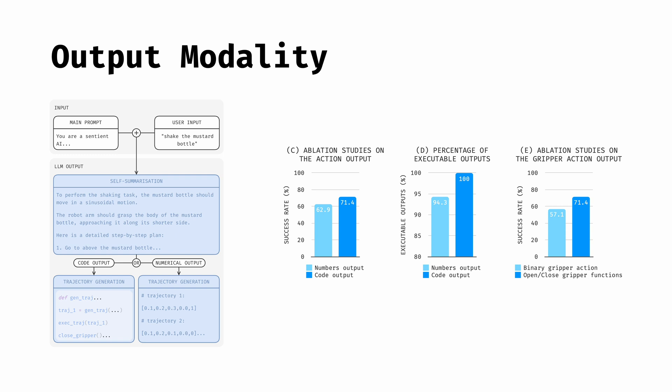For the gripper open or close action, we compare using a binary value 0 or 1, or explicit functions open gripper or close gripper, and show that the LLM achieves better performance when using explicit functions.